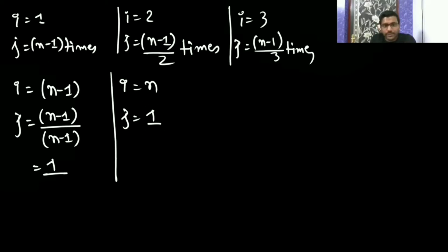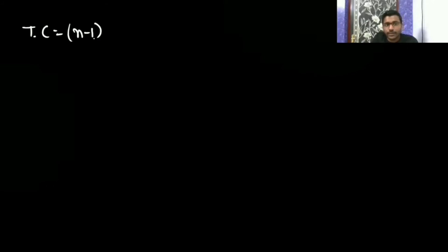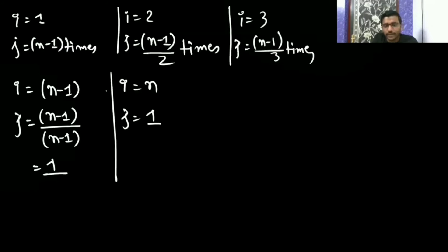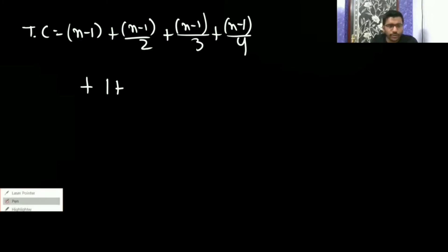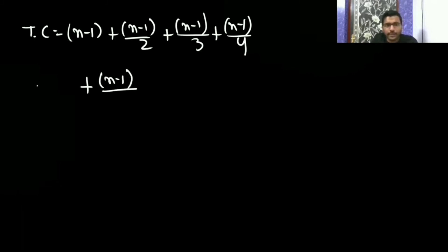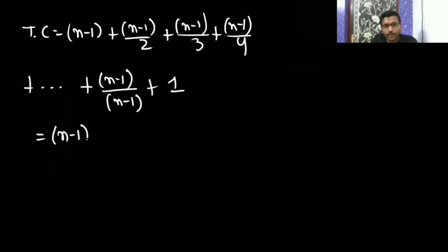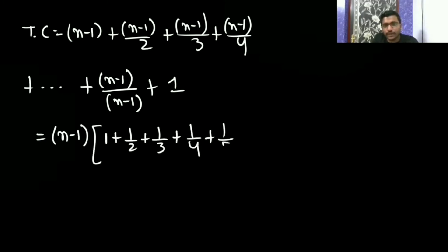Adding all these up gives us the time complexity: (n-1) + (n-1)/2 + (n-1)/3 + (n-1)/4 + ... + 1 + 1. The last two terms contribute 2. Taking (n-1) as a common factor gives us (n-1) times the sum of 1/1 + 1/2 + 1/3 + 1/4 + ... + 1/(n-1).